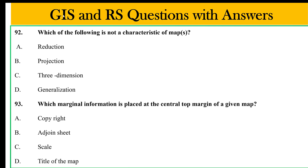The following are characteristics of maps. Reduction is the reduction of the representation of the map. This is the projection of maps. The map is a 2-dimensional representation of 3-dimensional reality.